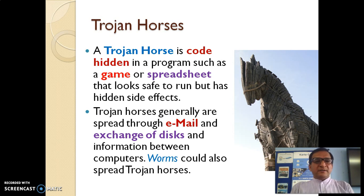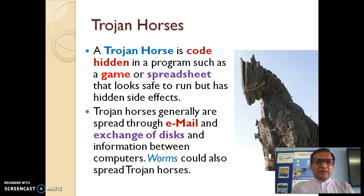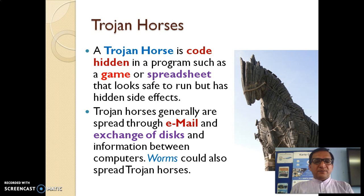There is an interesting story behind the Trojan horse — you can look it up. It comes from the Battle of Troy, where the Greeks won under the leadership of Odysseus. Odysseus and his key army men hid themselves inside a large wooden horse called the Trojan horse, which looked safe to the enemy but was hiding soldiers — and that is how they won the battle.